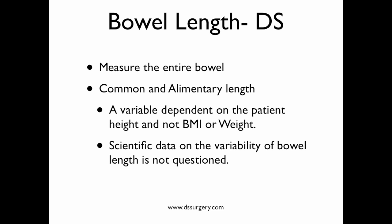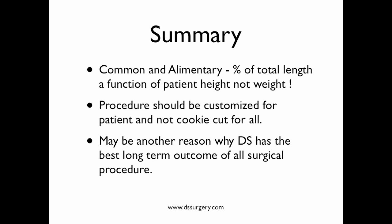As the studies demonstrated, the length of the small bowel is not a function of body mass index or preoperative weight, but rather a function of height — and even within the linear regression, there was large variability. In my opinion, subjecting a patient to the duodenal switch with a randomly decided bowel length, without knowing the absorptive capacity, increases the potential for either significant weight loss with nutritional deficiency, or inadequate weight loss. In summary, the common channel and alimentary limb need to be a percentage of total length based on the patient's height, not weight. The procedure should be customized, which may be another reason why the duodenal switch has the best long-term outcomes of all surgical weight loss procedures.